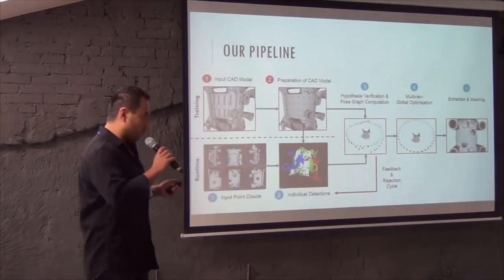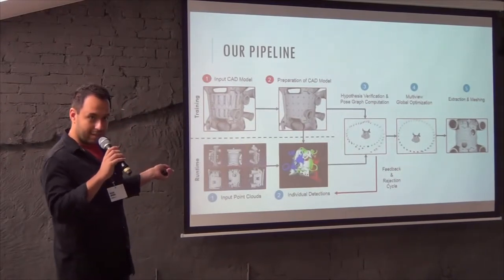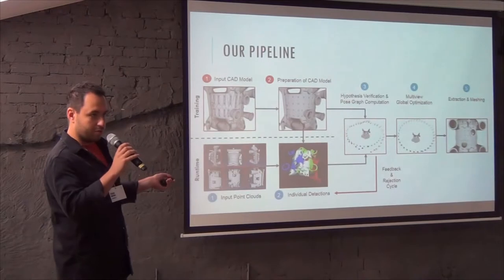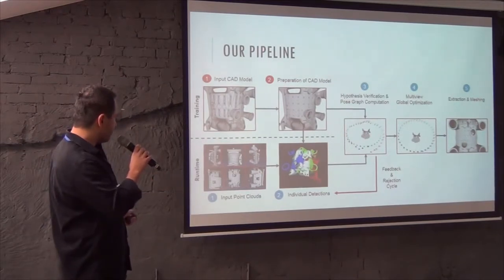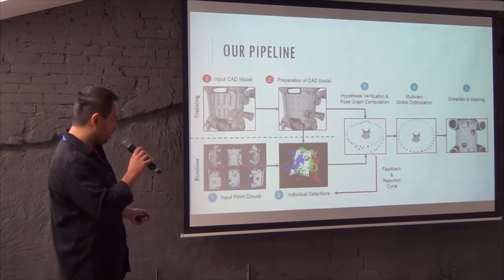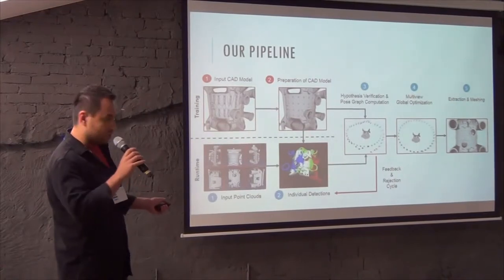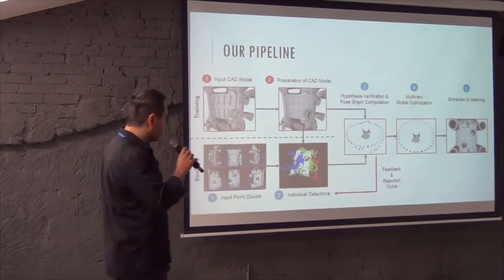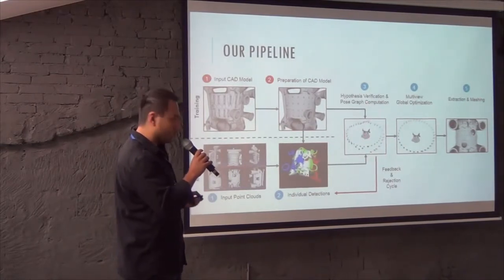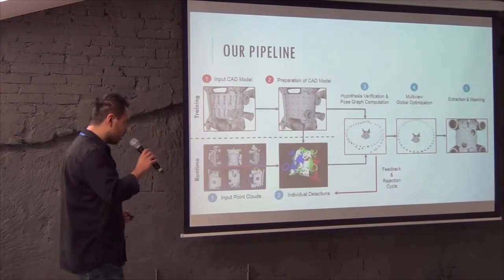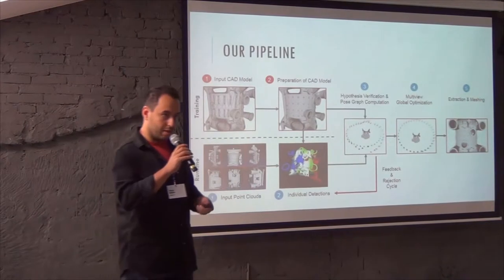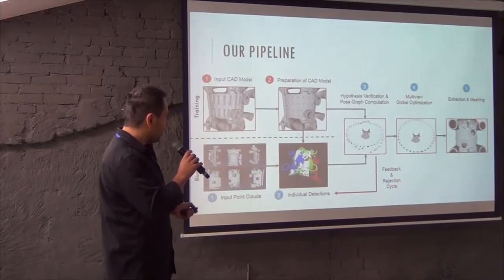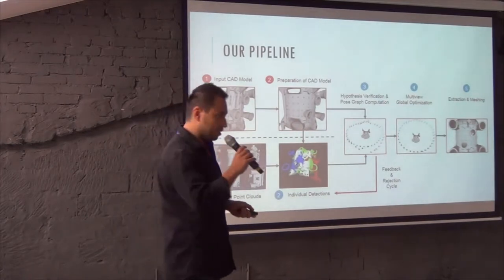Instead of estimating frame-to-frame or scan-to-scan transformations, we want to estimate transformations with respect to the model coordinate frame. Here is the pipeline: you take an input CAD model from industry — really crappy — and prepare it for computer vision. Then at runtime, you have a bunch of scans. You detect the CAD model within those scans, giving a rough alignment — just a rough initialization. The CAD model is not the real thing, so after initialization you do a pose graph optimization. There's a feedback cycle to the user, and then the actual optimization.